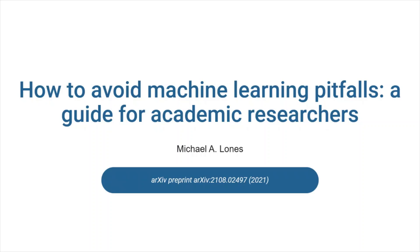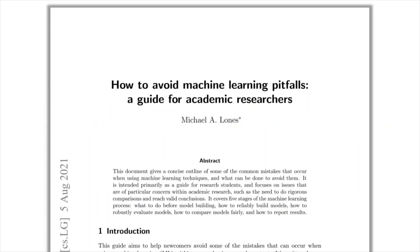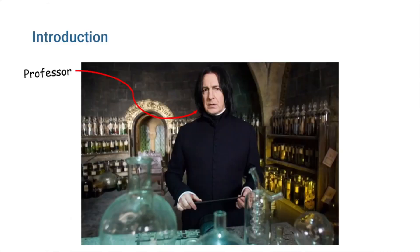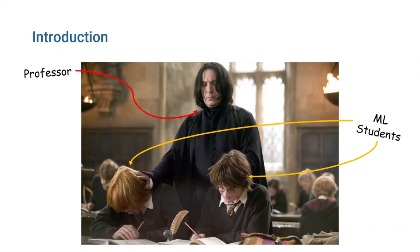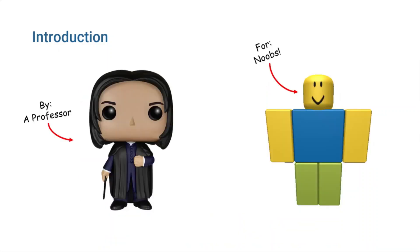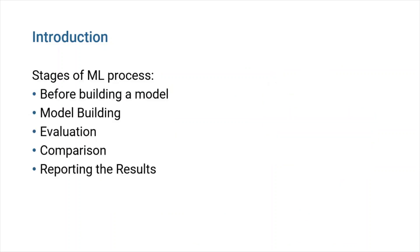Today I'd like to discuss the main points in Michael Lohn's paper 'How to Avoid Machine Learning Pitfalls: a guide for academic researchers.' This paper aims to describe some of the most typical errors made while employing machine learning techniques, as well as how to prevent them. It focuses on topics particularly important in academic research, such as the necessity to conduct fair comparisons and reach valid conclusions. This guide was prepared by a professor and focuses on lessons learned while doing ML research in academia and mentoring machine learning research students. It's mostly intended towards machine learning beginners, such as students and other researchers who are just getting started in the area. This article has helpful hints for each step of the machine learning process, which I will attempt to explain in this video.